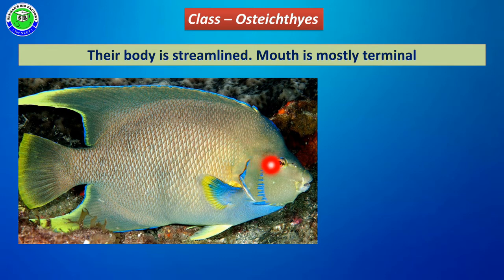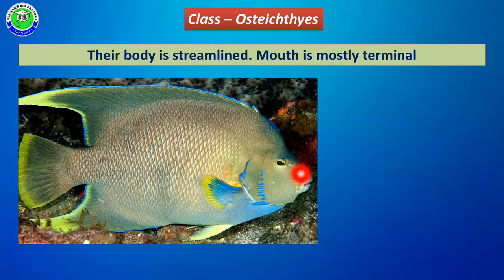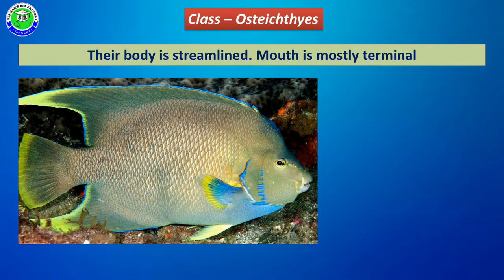These members also have a streamlined body — the body is very long but with tapering ends. Because of this streamlined body, these fishes can easily swim within water. The mouth is terminal in position, not ventral as in Chondrichthyes. Presence of a terminal mouth is another important character of Osteichthyes members.